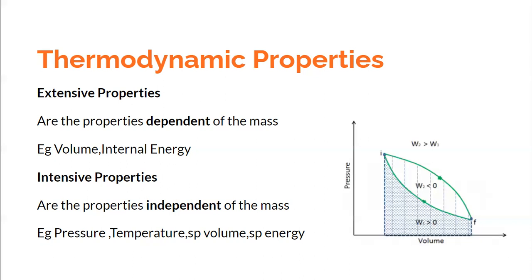Similarly, internal energy is a property that depends on mass — a working fluid with more mass has more internal energy than the same fluid with lesser mass. So dependence on mass makes a property extensive. There are also properties that are independent of mass, such as pressure and temperature. These are called intensive properties.